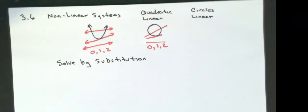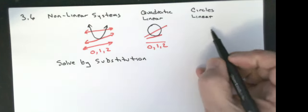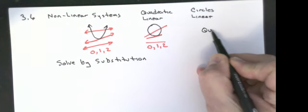You have two homework questions: you're doing 4 and 6. Number 4 is a circle, and 6 actually has a quadratic with a linear, so I'm going to help you set that one up. The other one we have is a quadratic with a circle.